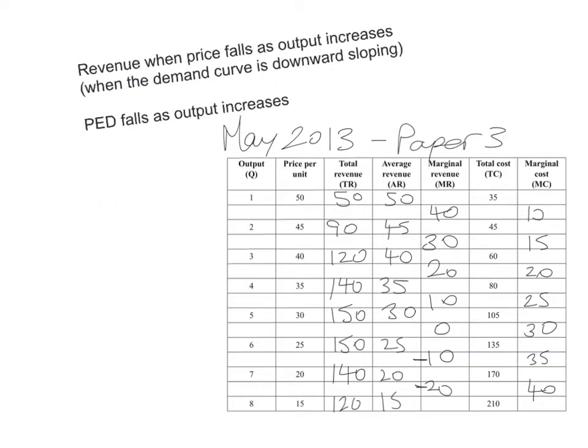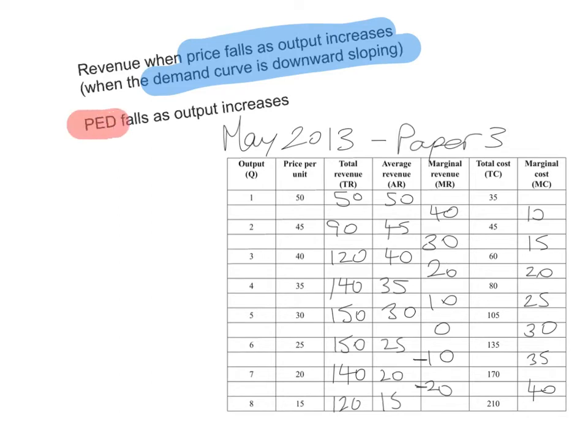Things are a little bit different when we plot the revenue curves in the case of price falling as output increases — on a regular downward sloping demand curve. We know that on a regular downward sloping demand curve, the top part has quite high price elasticity of demand. At higher prices, demand is quite price elastic. And as you go down the demand curve, the price elasticity of demand falls — it becomes more inelastic or less elastic. Let's have a look at this example.